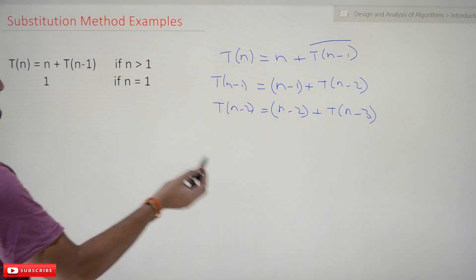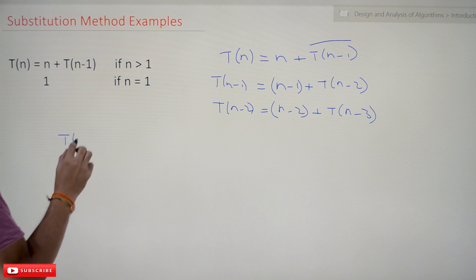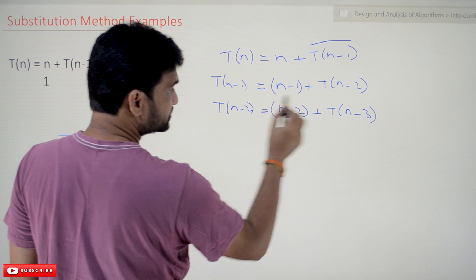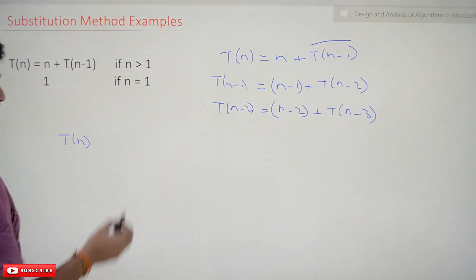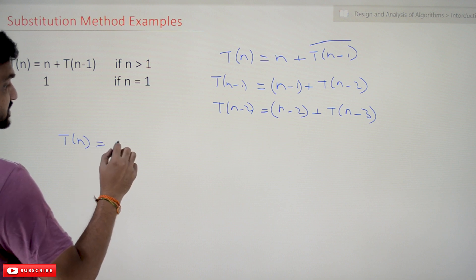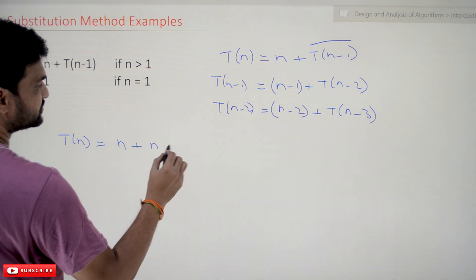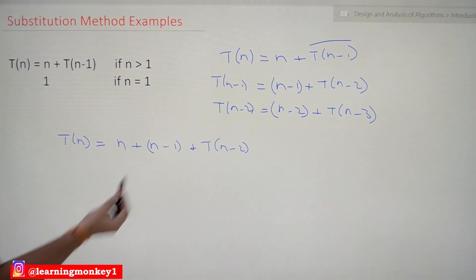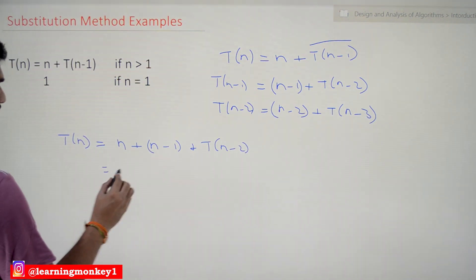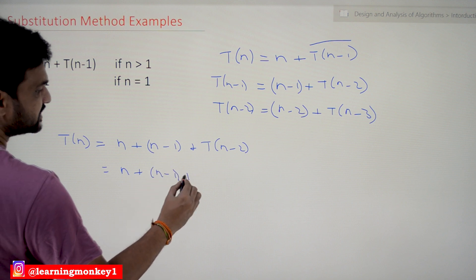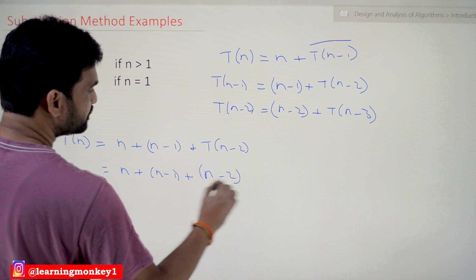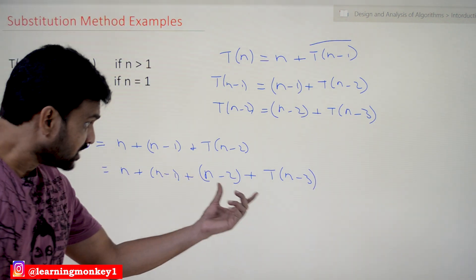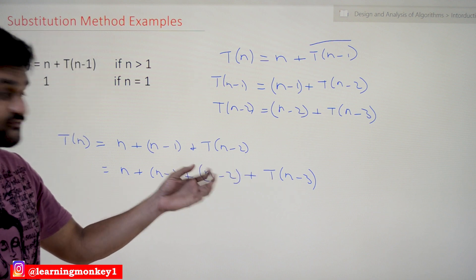Now let's solve this by substituting values into the equation. In place of T(n-1) we substitute (n-1) + T(n-2), giving us n + (n-1) + T(n-2). Then substituting T(n-2) = (n-2) + T(n-3), we get n + (n-1) + (n-2) + T(n-3). This is how the sequence expands.